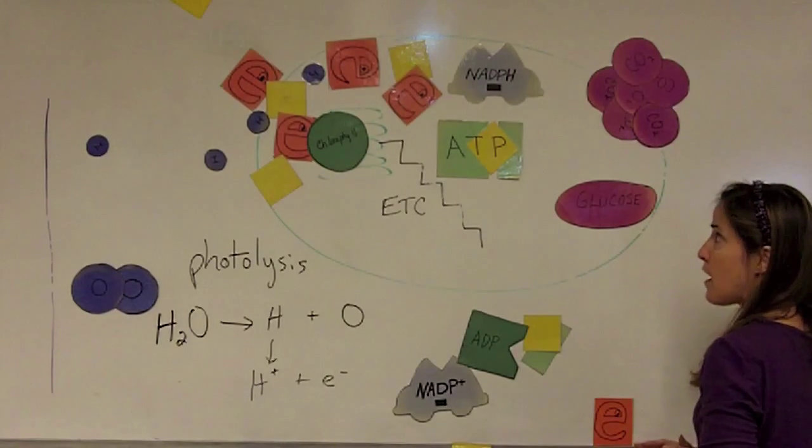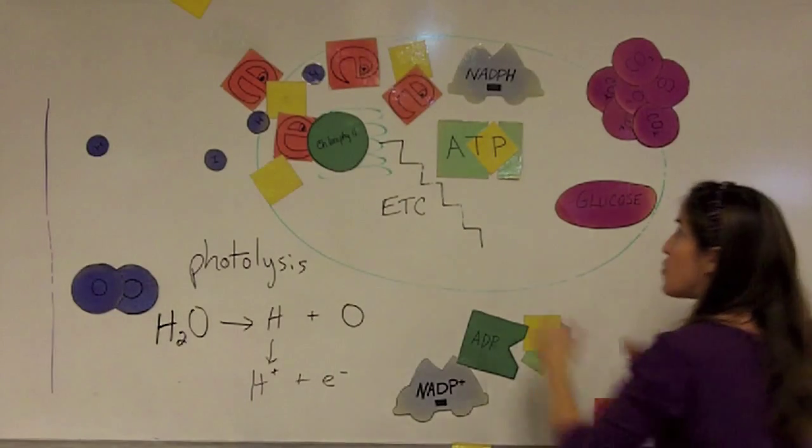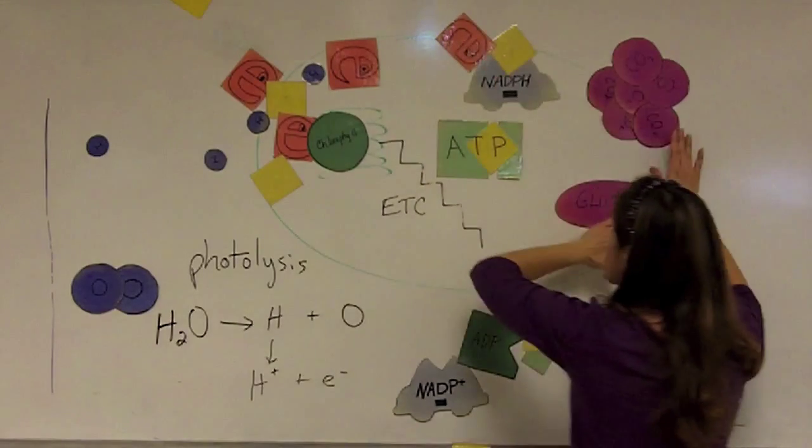Now again, this takes a lot of energy to build carbon dioxide into glucose. So where does the energy come from? Well, it's going to come off of our carriers.